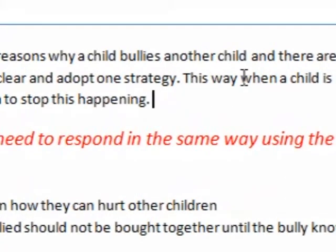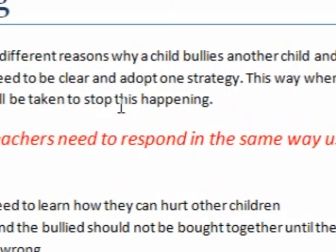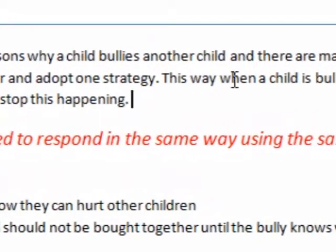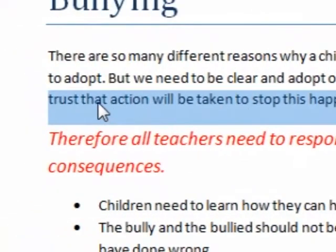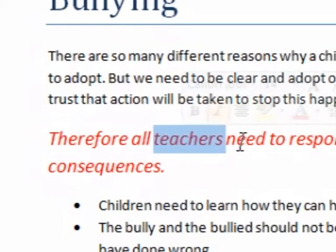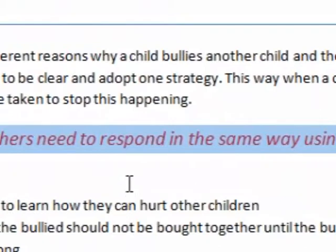So just say we wanted to select this whole sentence here. What we're going to do is hold the Control key down and click once, and it selects the whole sentence for us. Let's try this one — we'll do one word first, but now we want to do the whole sentence. So we're going to press Control and one click and we'll do the whole sentence.